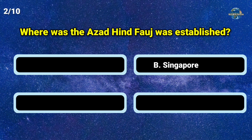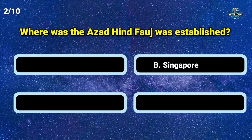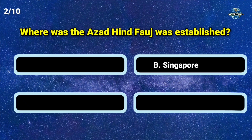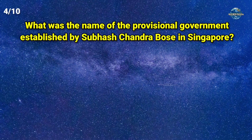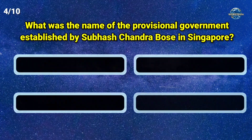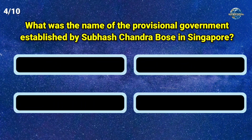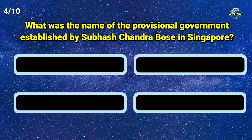Where was the Azad Hind Force established? Option B, Singapore. What was the name of the provisional government established by Subhash Chandra Bose in Singapore?